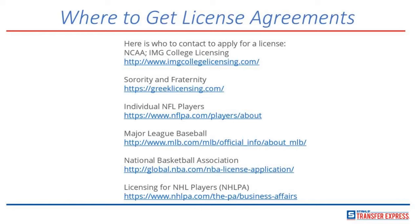We can't tell you exactly where to get permissions, but there are some general sources you can find on Google. For certain sororities and fraternities, you can go to greeklicensing.com. The NBA has a section at global.nba.com/NBA-license-application. For things that are more obscure — like cartoon characters outside the Disney family — it can be hard to figure out who owns them. We can identify that we need permission, but it's up to you to find out where that permission comes from.